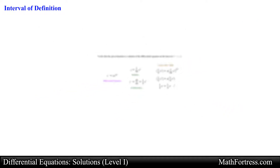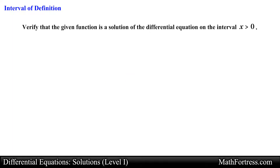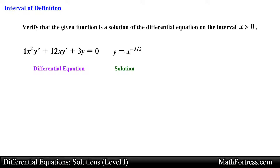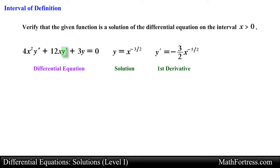At times the interval might not be all real numbers, like in the following example. Show that y = x^(-3/2) is a solution to the differential equation 4x²y'' + 12xy' + 3y = 0 for x greater than 0. Looking at the ODE we see that we are going to need the first and second derivative of the function. The first derivative and second derivative are obtained by applying the power rule from Calculus 1.